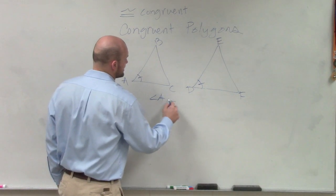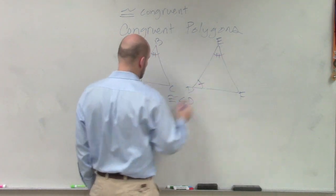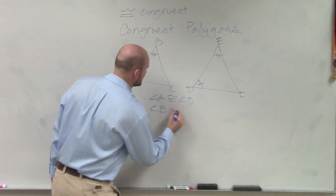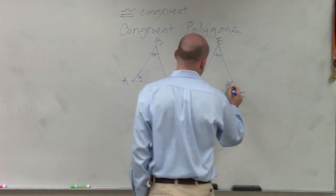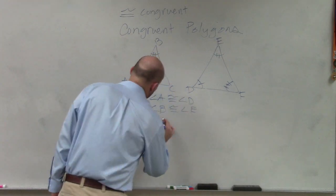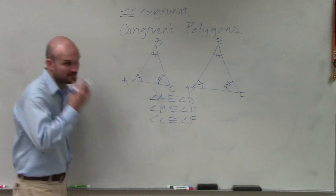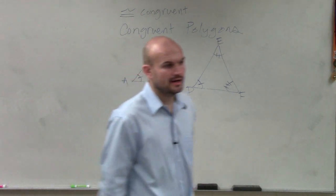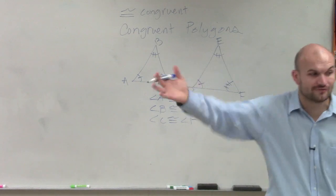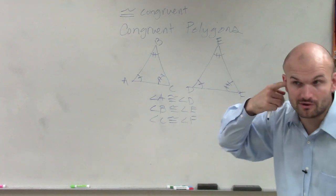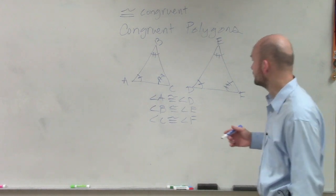Angle A is congruent to angle D. Angle B is congruent to angle D. Angle C is congruent to angle F. Now, that shows similarity. So we've got to make sure it's congruent for all of their parts. Not just their angles are equal, but also the measure of their sides.